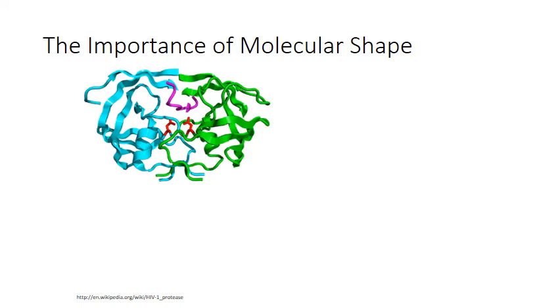When you look at this depiction of the enzyme, the active site is this hole in the center. This is where the polypeptide chain runs through and is cut into individual segments.